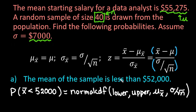Anytime it says less than, our lower value is going to be negative 1e99, which essentially means negative infinity — it's negative 1 with 99 zeros behind it. Our stopping value is going to be 52,000. As long as your lower value is more than five standard deviations away, this is the most accurate value you're going to get.